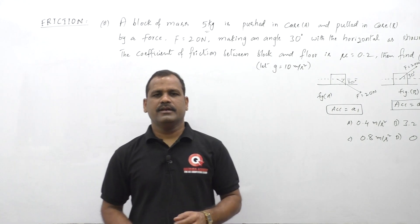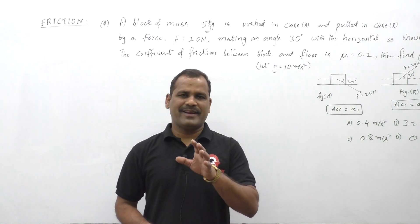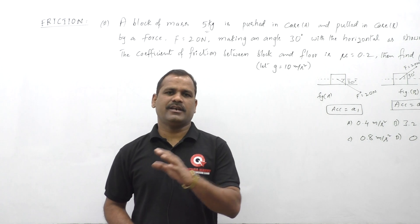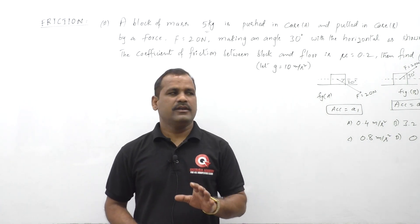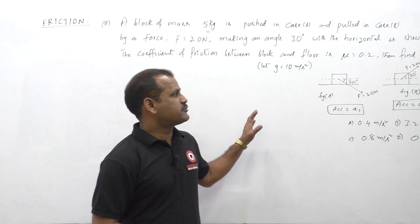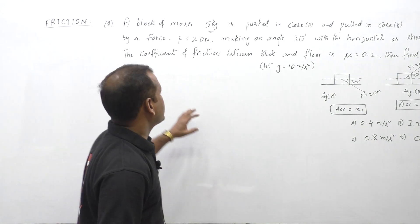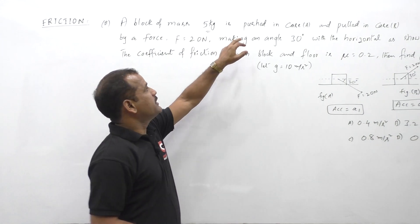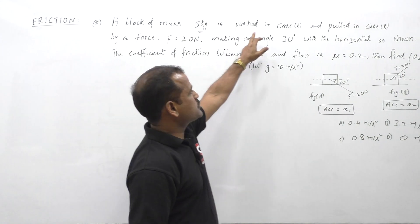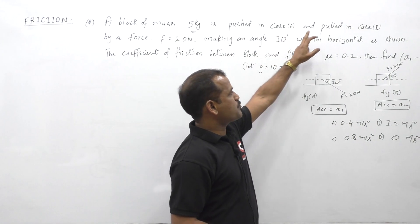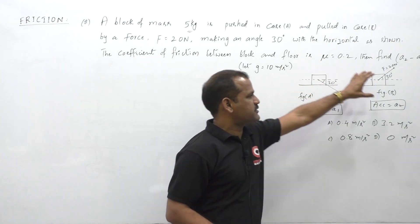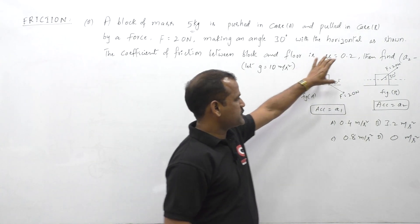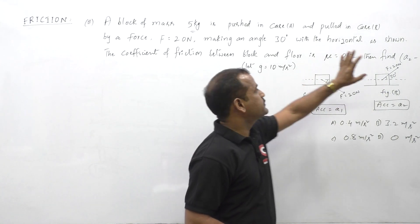Consider this problem — it explains whether pushing is easy or pulling is easy for an object. A block of mass 5 kg is pushed in case A and pulled in case B, where case A is pushing and case B is pulling.